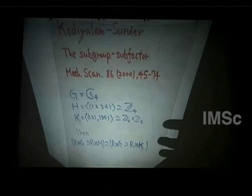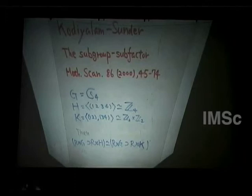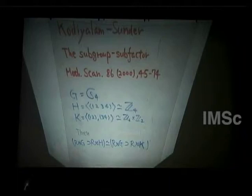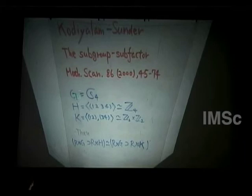What they did was compute the so-called connection — in a good situation, the connection is a complete invariant for subfactors. For group-subgroup subfactors, there is a way to compute connections using representation theory. They showed that H⊂G and K⊂G give the same invariant, thus proving the theorem.